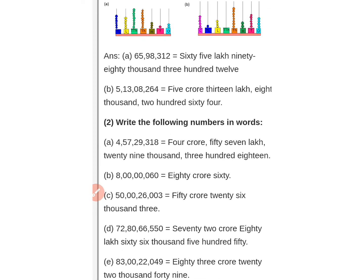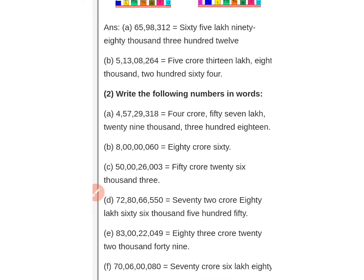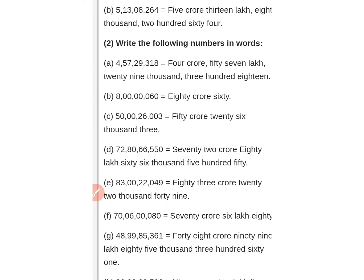Now, what happens in the Indian system regarding comma placement? From the right side, the first period is ones, tens, hundreds — three digits — then put a comma. Then thousands and ten thousands — two digits — then put a comma. Then lakhs and ten lakhs — two digits — then put a comma. This is how commas are placed in the Indian system.